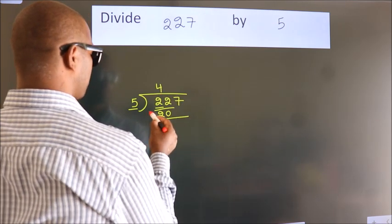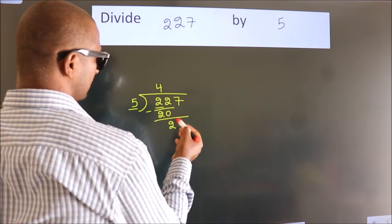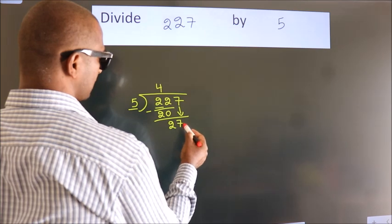Now we should subtract. We get 2. After this, bring down the next number. 7 down, so 27.